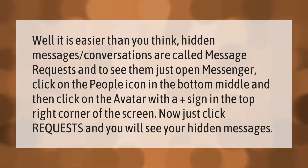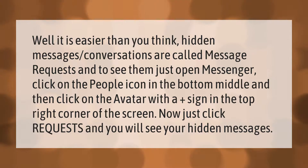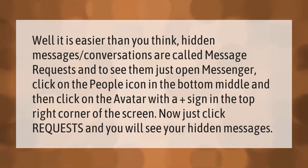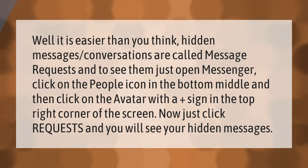Hidden messages and conversations are called message requests. To see them, open Messenger, click on the People icon in the bottom middle, and then click on the avatar with a plus sign in the top right corner of the screen. Click on Requests and you will see your hidden messages. Thank you for watching — please subscribe and hit the bell notification.